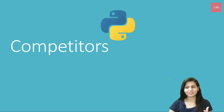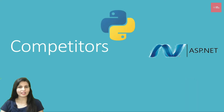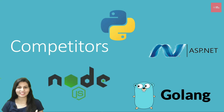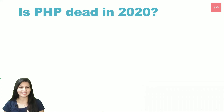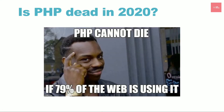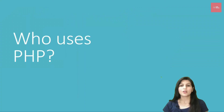PHP's competitors include Python, ASP.NET, Golang, and Node.js — with Node.js being the most popular among them. Many people feel PHP is not being used these days or is an obsolete language, but that's not true. PHP is not dead in 2020 — every 8 websites out of 10 are using PHP. It's the oldest language and really easy to code and learn.